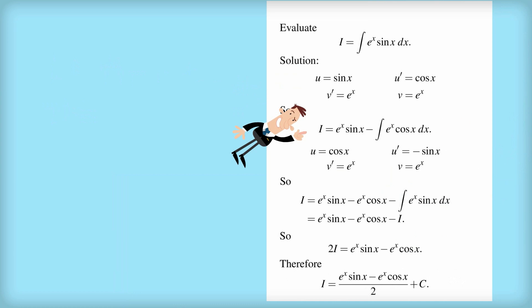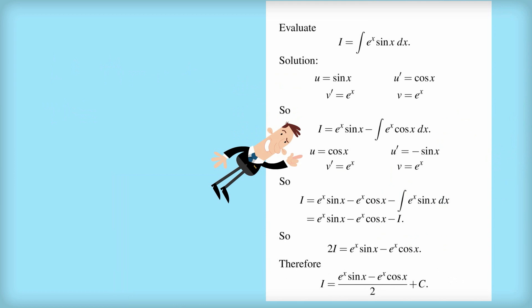Now I have to do the integration of e to the x cos x. And you can see here the calculations for u and v dash and u dash and v. And so that gives me this expression for I.